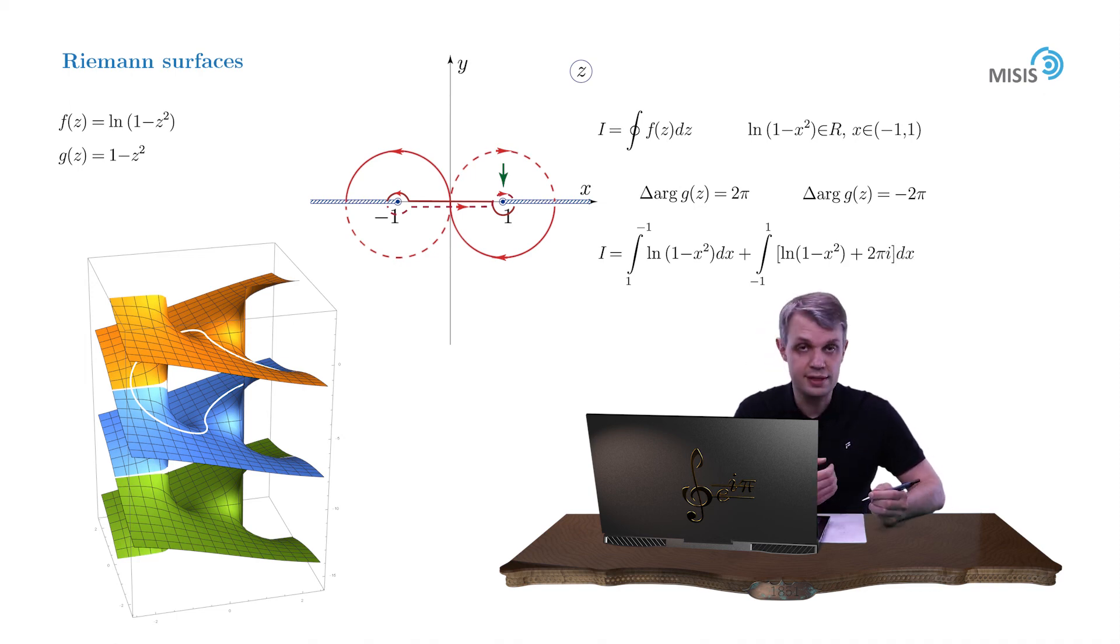And you see that these integrals have common term, the log function, which simply cancel when we sum them up. So only 2 pi term remains and we obtain 4 pi as the result of the integration.